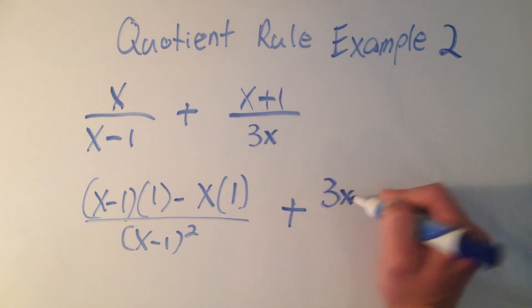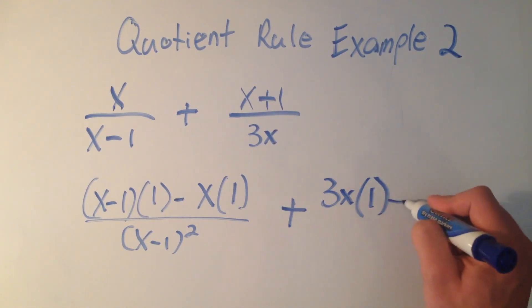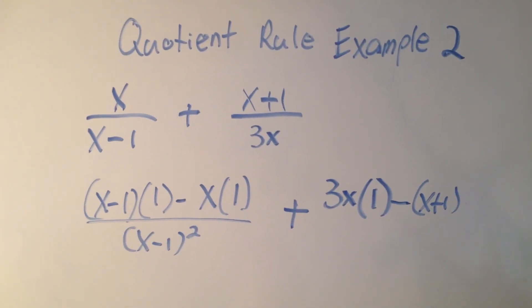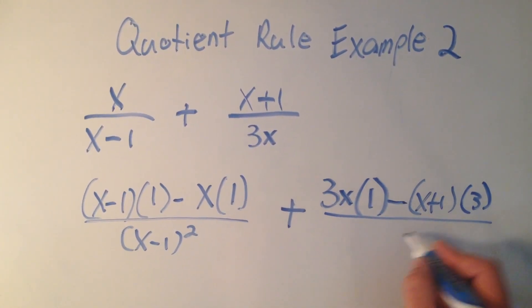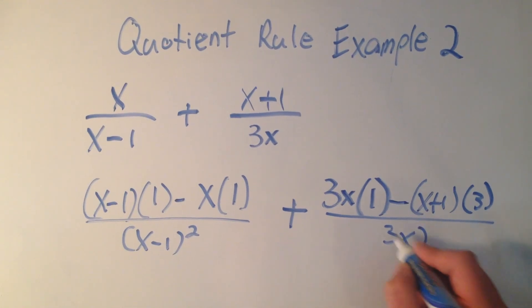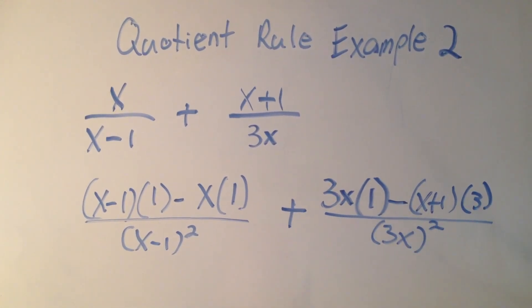The quotient rule is the bottom times the derivative of the top is 1, minus the top. Notice I'm putting it in parentheses. Times the derivative of the bottom, which is 3, all over the bottom quantity squared.